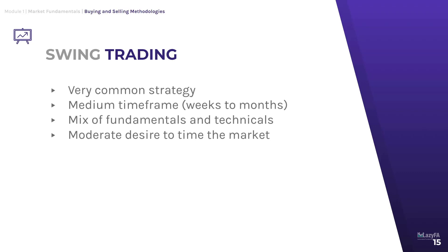One strategy that's slightly more involved than buy and hold is swing trading. As opposed to a long-term years-to-decades time frame, you use a medium-term time frame of usually weeks to months. You buy something, hold it for a few weeks or a month or two, and then sell it. The goal is to capitalize on more short-term fluctuations in price — things that affect the stock short-term but not necessarily long-term. Most swing traders will focus on a mix of fundamental and technical analysis: reading candlestick charts, SEC filings, earnings reports, and so on. In swing trading, you generally have a moderate desire to try to time the market.